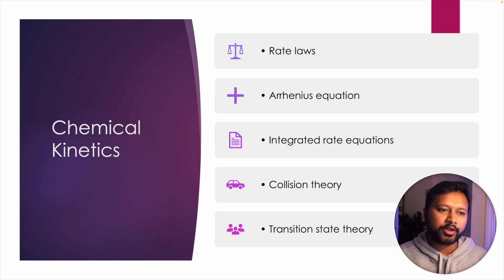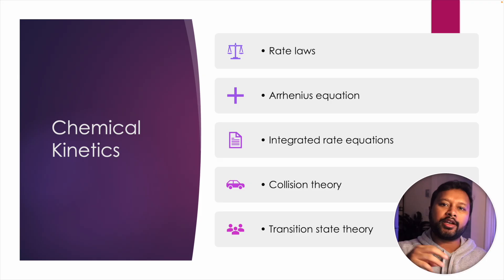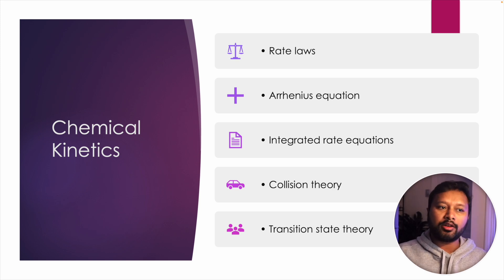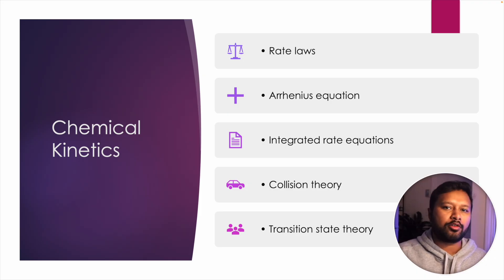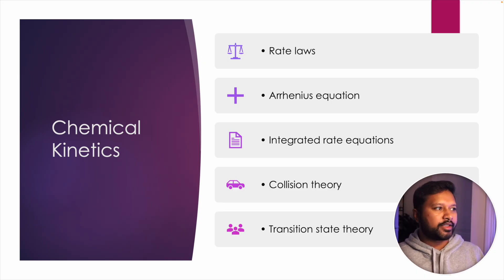Then comes transition state theory, which is an important topic covering how the transition state forms and how the rate changes from the reactant side to the product side depending on the energy barrier. When you study transition state theory, be very specific about the thermodynamics part — that is also very important — and how transition state theory relates the partition function. Try to finish that as well because it can be asked in a creative manner in the exam.